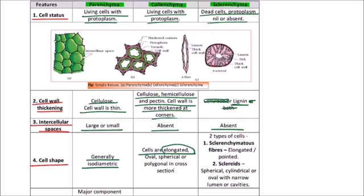There are two types of cells in sclerenchyma. First, sclerenchyma as fibers; second is sclereid. The sclerenchyma fibers appear elongated and pointed, while the sclereids are spherical, cylindrical, or oval with narrow luminal cavities.